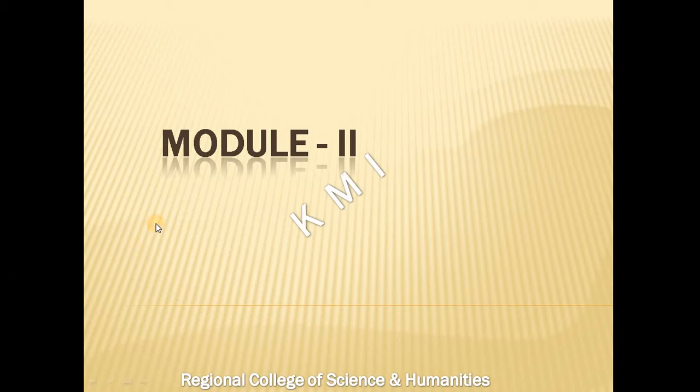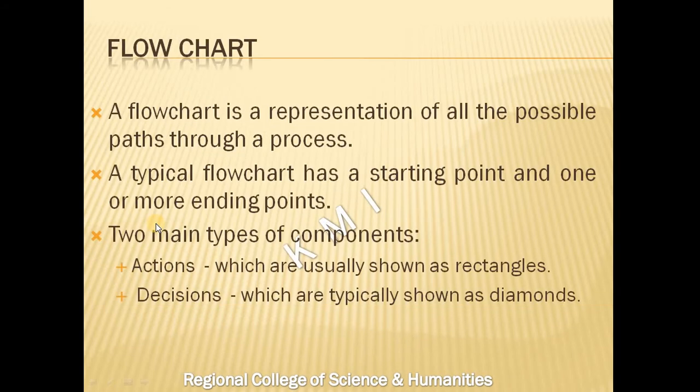First of all, what is a flowchart? It shows all possible paths of a process. A flowchart represents a process with a starting point and one or more ending points. There are two main types of components in a flowchart: Actions and Decisions.